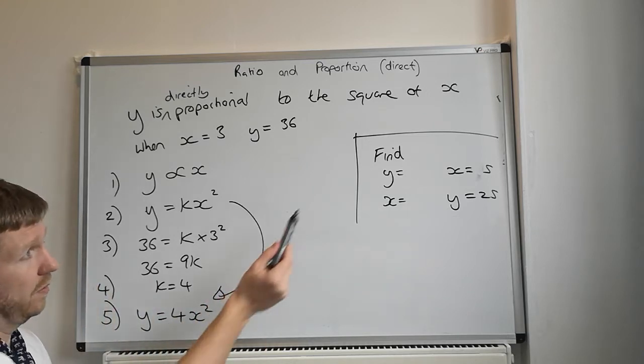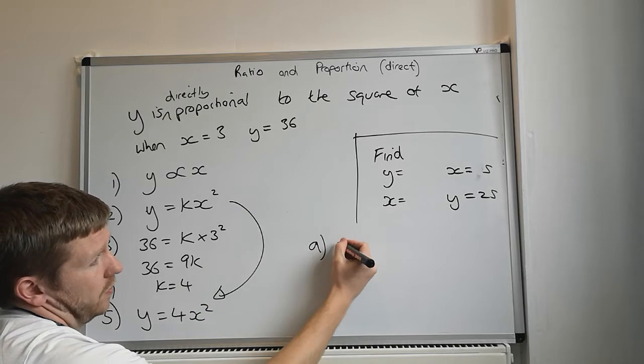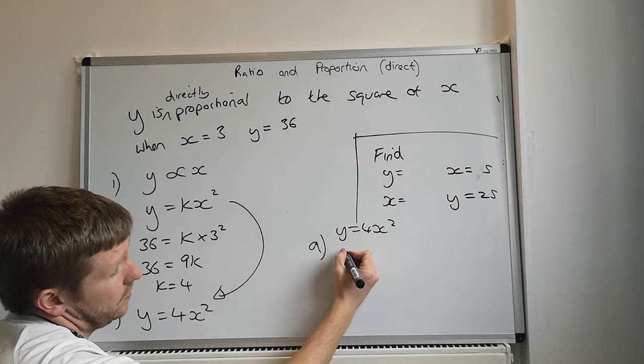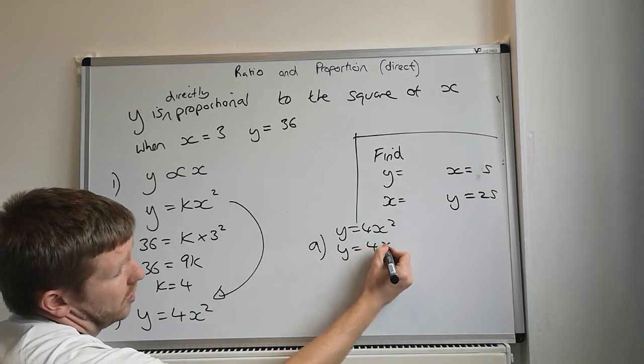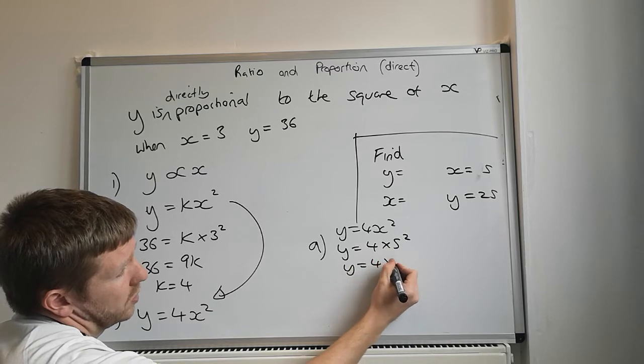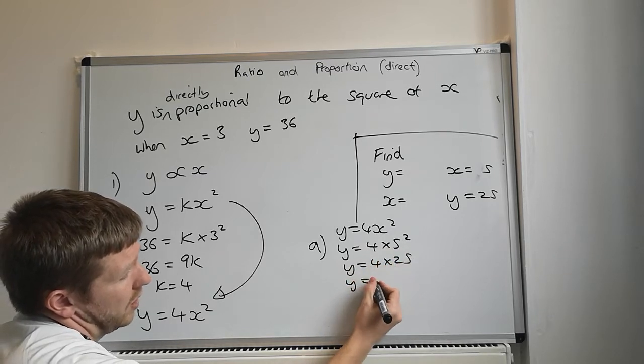Then we're going to use that for these. So question a, we're using the y is equal to 4x squared. When x equals 5, so y is equal to 4 times 5 squared, y is equal to 4 times 25, y is equal to 100.